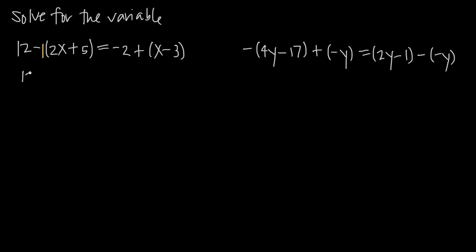We can distribute that negative 1 across the 2x plus 5. Negative 1 times 2x is negative 2x, so we get minus 2x. And negative 1 times positive 5 is negative 5, so we get minus 5. Over here on the right, we have this implied 1 in front of our parentheses, so we distribute that across x and negative 3. We get equals negative 2, plus x, and then positive 1 times negative 3 is negative 3, so we end up with minus 3.